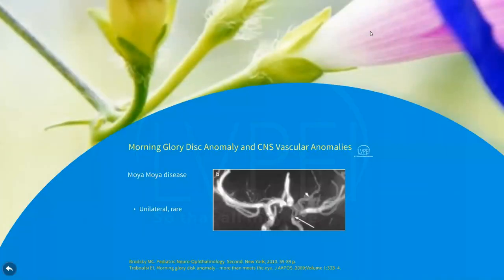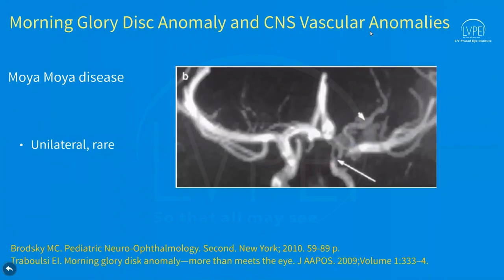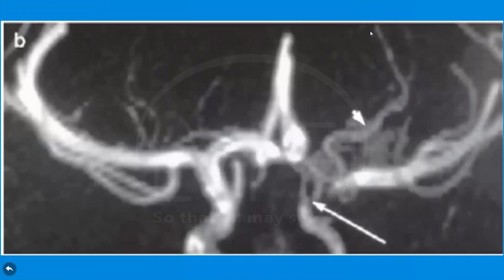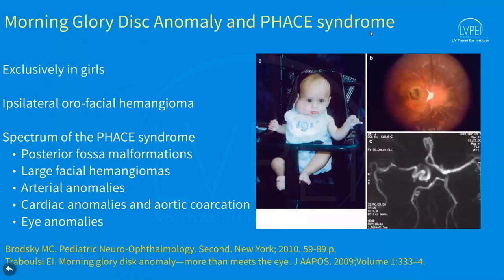Morning glory disc can also be associated with Moyamoya disease, in which there is hypoplasia of unilateral intracranial vessels. This MR angiography shows hypoplasia of the internal carotid artery. Next is PHACE syndrome, exclusively seen in girls, with ipsilateral craniofacial hemangiomas. The spectrum includes posterior fossa malformations, large facial hemangiomas, arterial and cardiac anomalies, and eye anomalies.